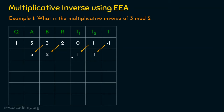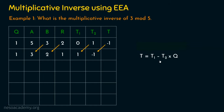Now repeat the algorithm: do A mod B. 3 divided by 2 gives quotient 1 and remainder 1. We are not taking 0 and 1 for T1 and T2 — that was only for the initial condition. Now T1 is 1 and T2 is −1. Applying the formula: T = 1 − (−1) × 1 = 2. T equals 2. The second row is complete.